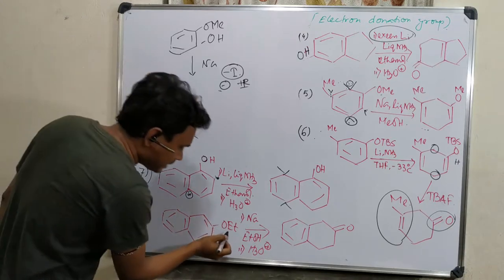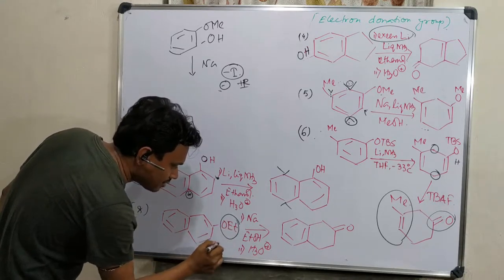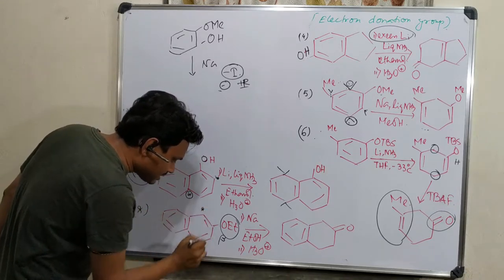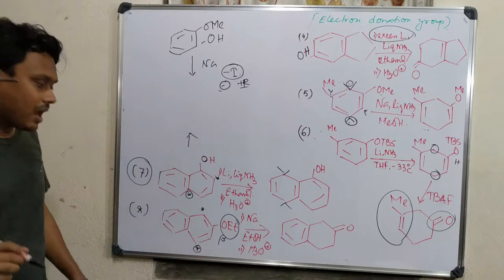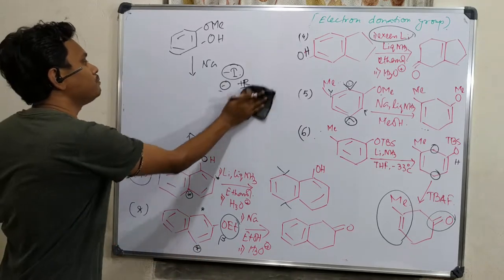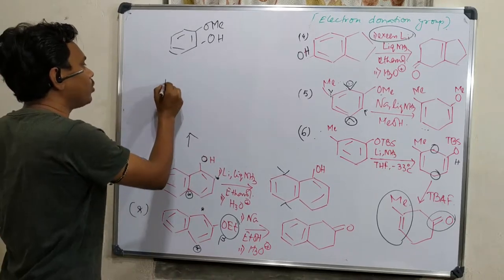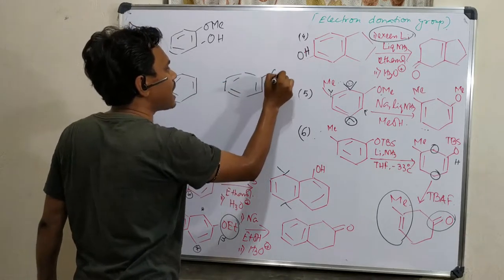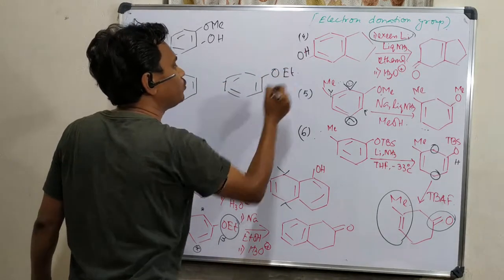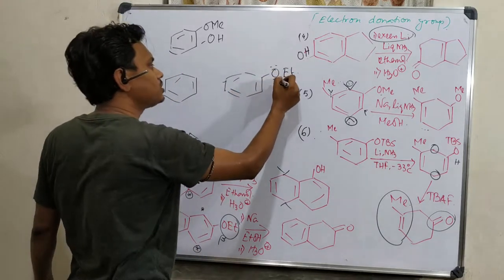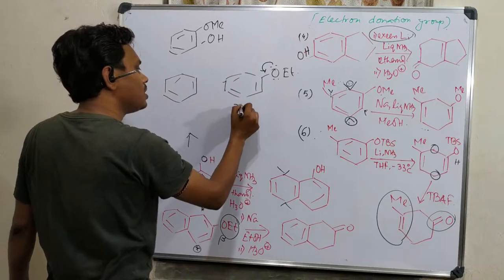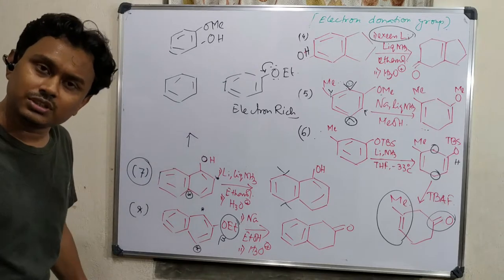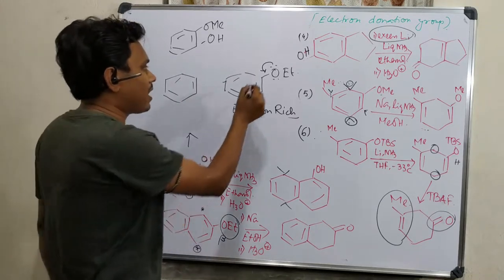But if we take beta-naphthoxide — this one — the reduction is possible, and these positions are reduced. Now you may ask the question: if I compare benzene versus, for example, this anisole derivative — which is more reactive? Actually this donates electron, it is electron-rich, so the chance is it would be less likely to take electrons during the dissolving metal reduction.